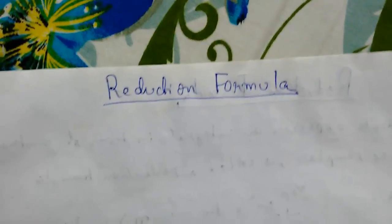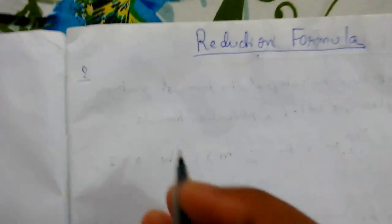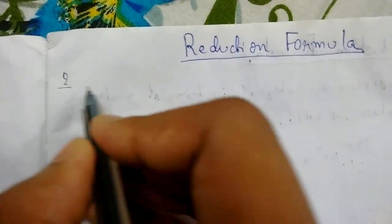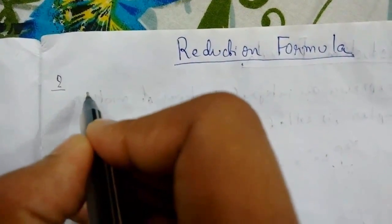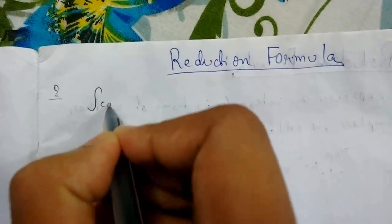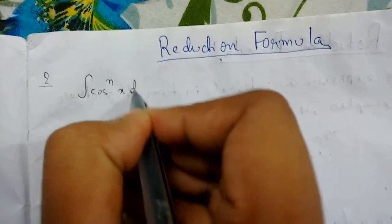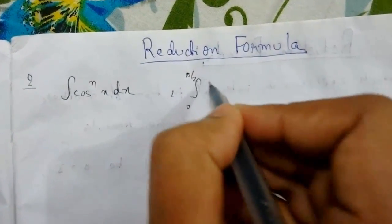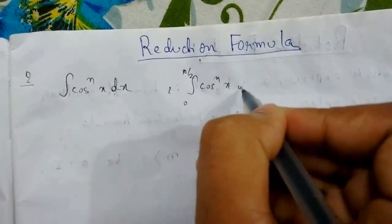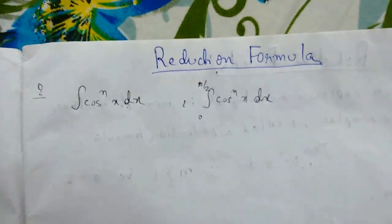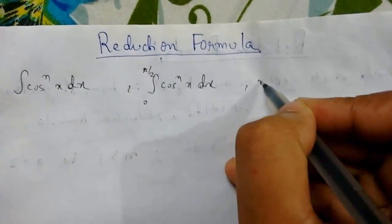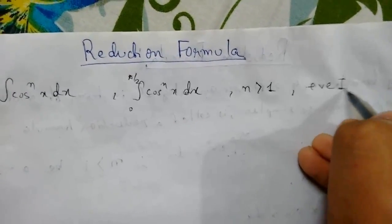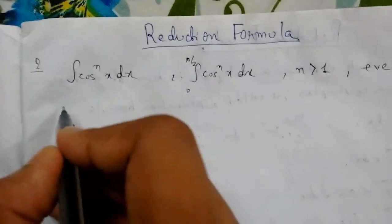Welcome back guys. Today we will be studying reduction formula. Specifically, we will be learning about the second standard integral of reduction formula: the integration of cos^n(x) dx, and number 2, that will be the definite integral from 0 to π/2 of cos^n(x) dx. Here n will be greater than 1 and it is a positive integer. So let us start.